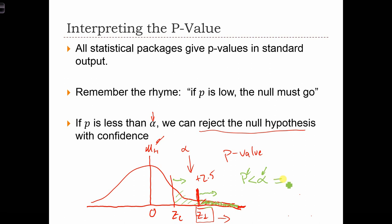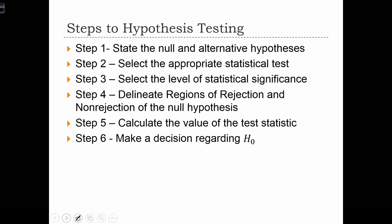And when this is the case, we use the rhyme: p is low, therefore the null must go. So we can safely reject. The probability of committing a type 1 error is smaller than the predefined threshold, the significance level that we had. So I'll see you guys at the permit. Thanks again for joining me.